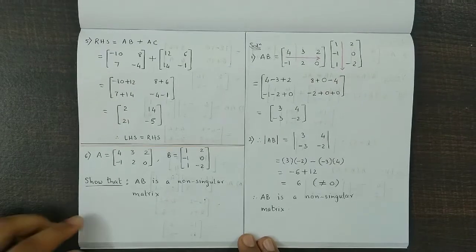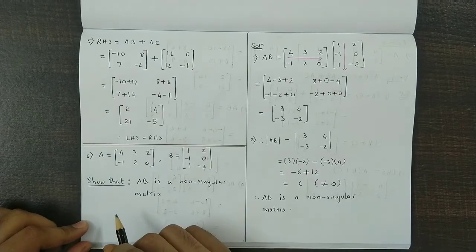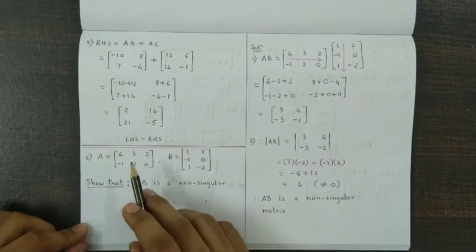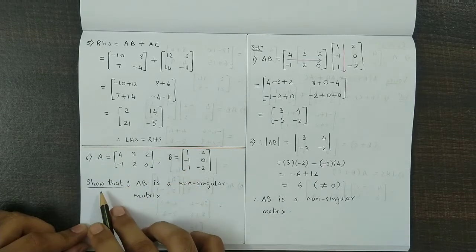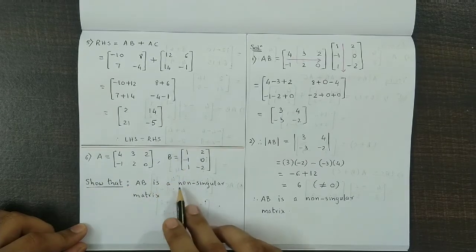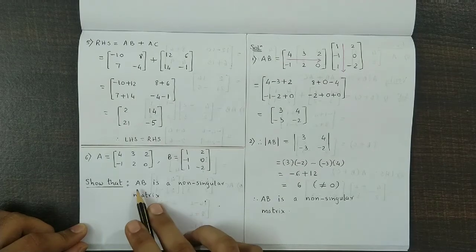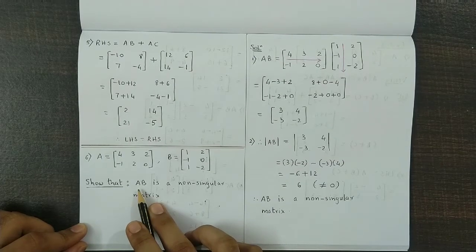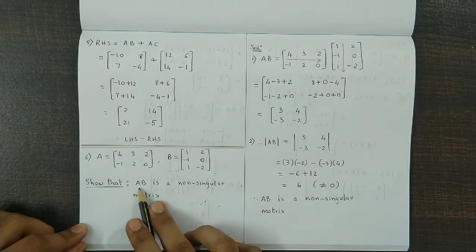Hello and welcome back. We now discuss question number 6 from exercise 2.3. We have been given two matrices A and B, and we have to prove that AB is a non-singular matrix. So first we need to obtain the product AB and then check its determinant value. If determinant is not equal to 0, then we say AB is a non-singular matrix.